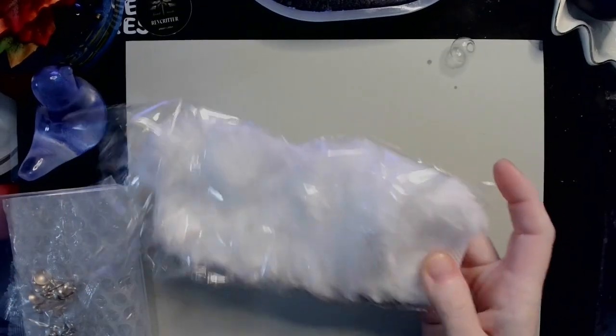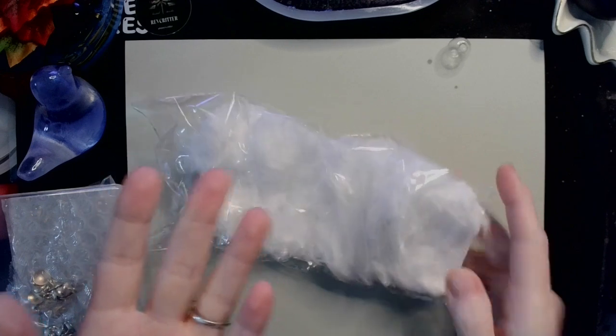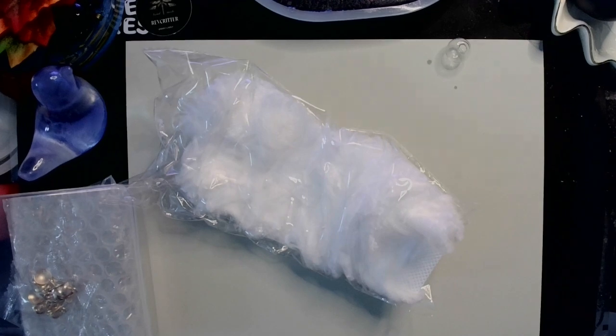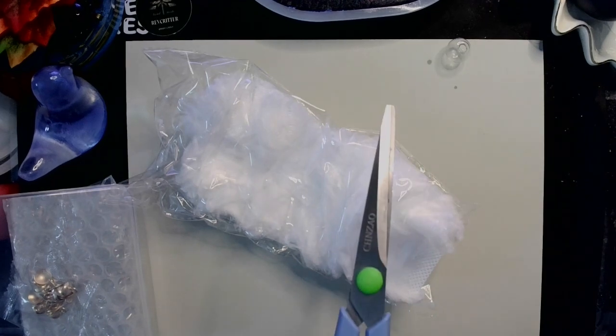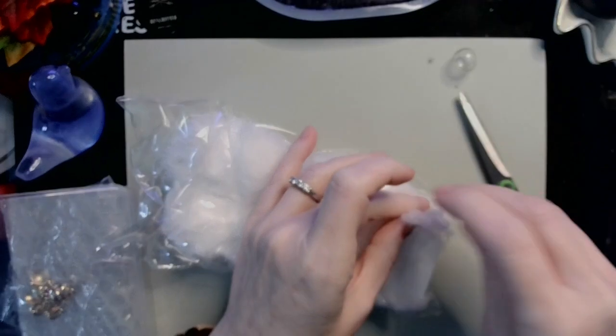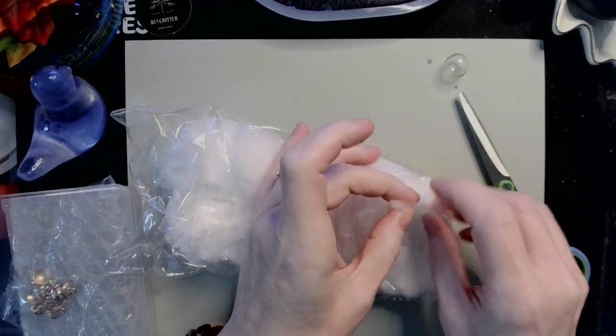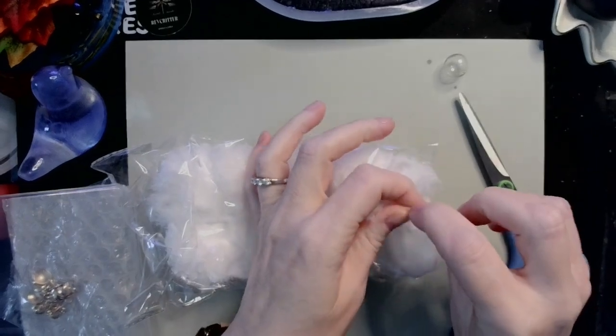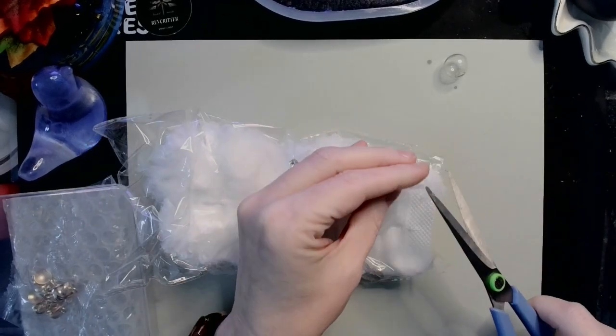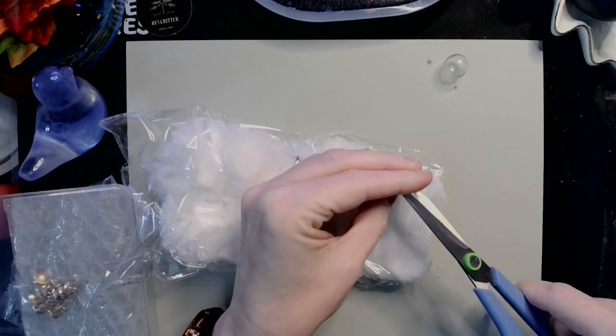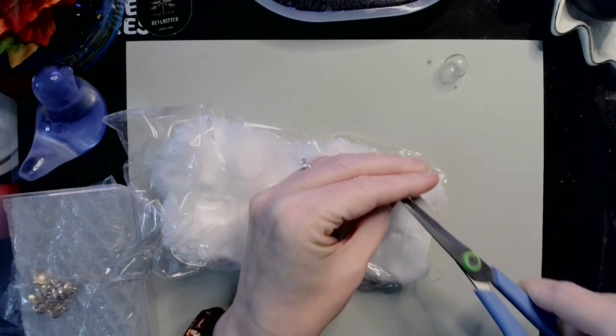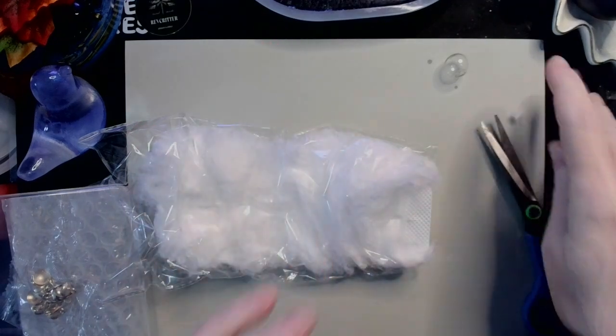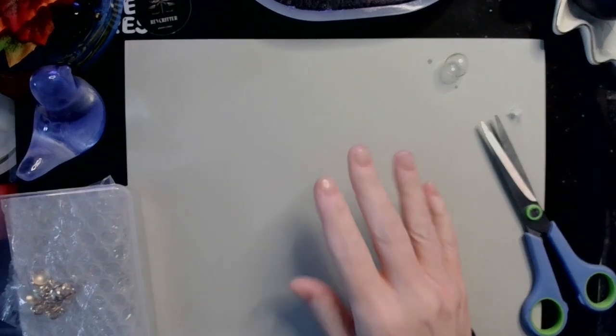And so that's one thing that we're gonna be using today for our ghost orb necklace. Now obviously this one hasn't been used. Please don't use a used one, but what I'm gonna do is take my handy dandy scissors and a little bit of our fuzziness here, and I'm just gonna snip off a little bit of the fuzz. See the fuzz?